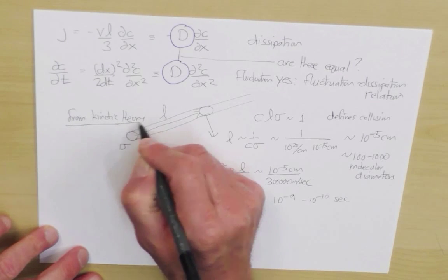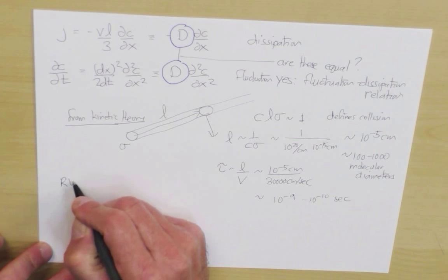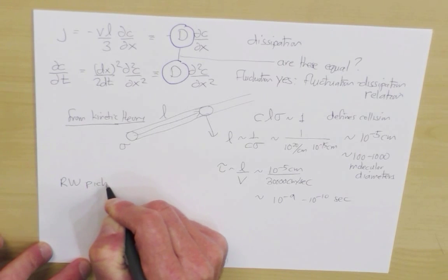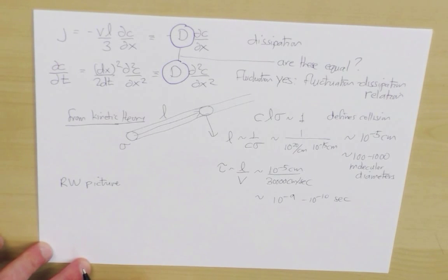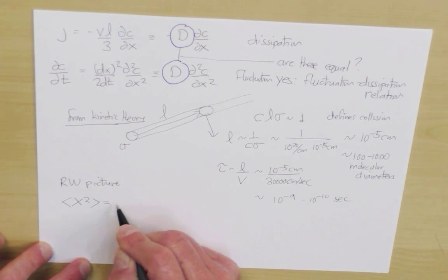So finally, to motivate or to attempt to argue for this fluctuation-dissipation relation, let's now go back to the random walk picture. And we derived at one of the very first lectures that the mean squared displacement of a random walker was equal to the number of steps in the walk times L squared.